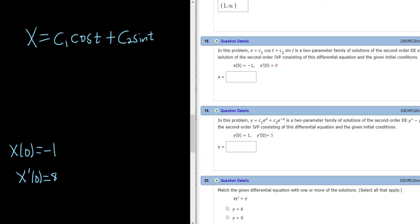Okay, so before we use these conditions, let's start by taking the derivative. So x prime, c1 is a constant so it hangs out. The derivative of cosine is negative sine, so this will be negative c1 sine t plus. Then again c2 is a constant, so the derivative of sine is cosine, so c2 cosine t.